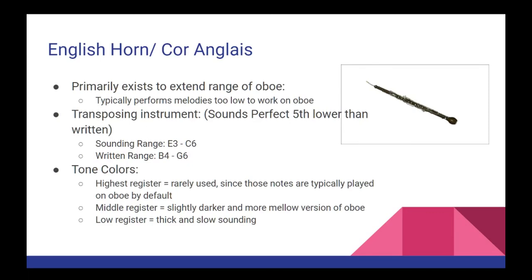The next instrument is the English horn, also known as the cors anglais. Just like the bass clarinet, there will rarely ever be a dedicated English horn player in an orchestra — typically one of the oboe players will simply switch to the English horn as needed. This instrument exists primarily to extend the reach of the oboe, so it can most commonly be found performing melodies or counter melodies that just wouldn't work on the oboe due to range or tone color reasons. The English horn is a transposing instrument and has a sounding range of E3 to C6, but is written a perfect fifth higher, at B4 to G6. Its lowest register has a very thick and slow kind of sound, while the middle register is very expressive and lyrical, with a slightly darker and more mellow sound than the oboe. The highest register is very rarely used, as the same pitches can be performed on an oboe, which tends to be the default instrument when choosing between the two.